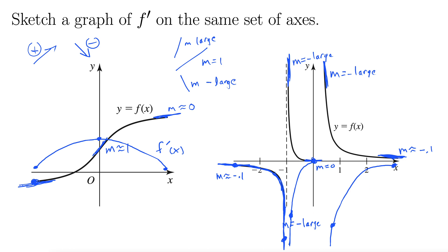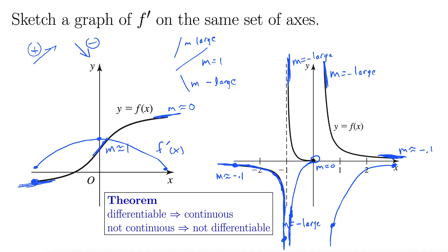The blue is the graph of the derivative. There's one small point to note right at this discontinuity — we actually need to put an open circle there. There's a theorem that goes like this: if a function is differentiable, then it is continuous at that point; but if a function is not continuous at a point, then it's not differentiable at that point. Because this function is not continuous at the origin, the graph of our derivative cannot be defined there. So we need to leave an open circle right at that center point.